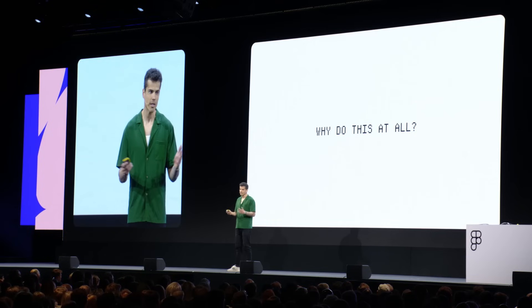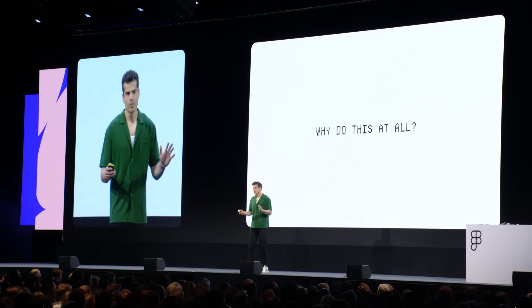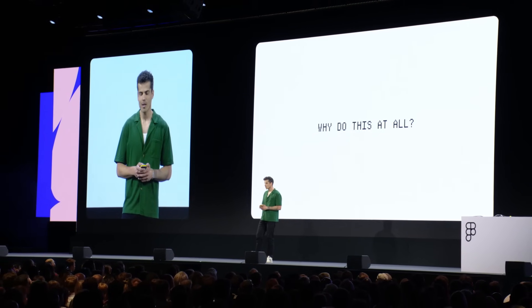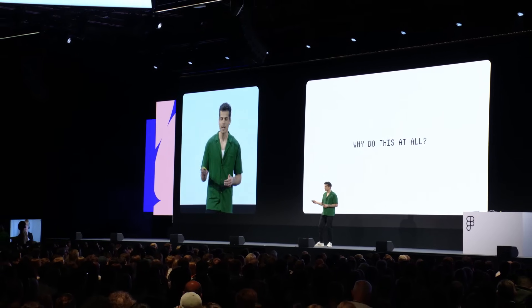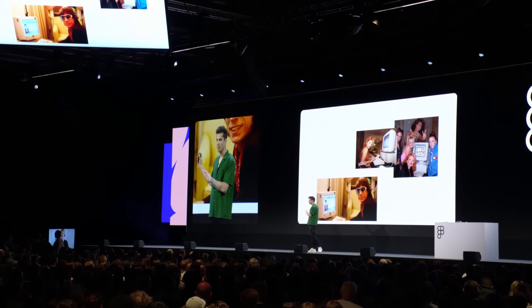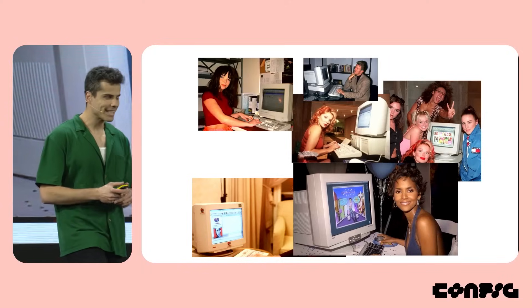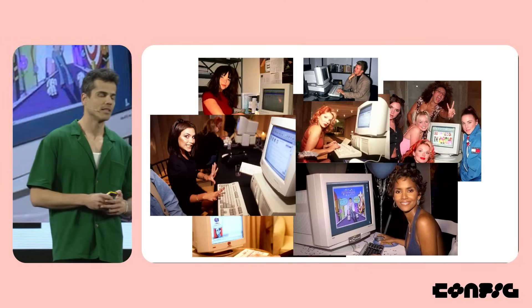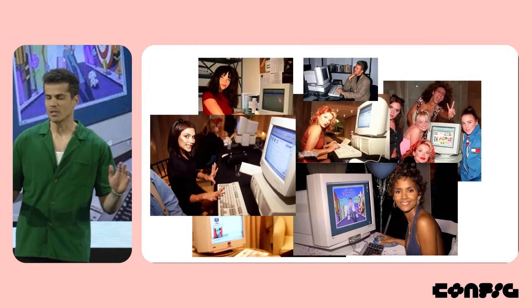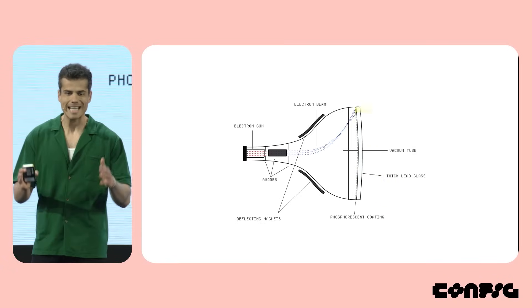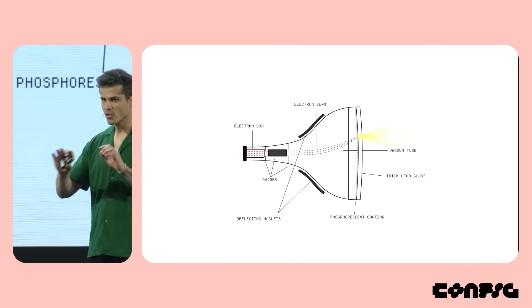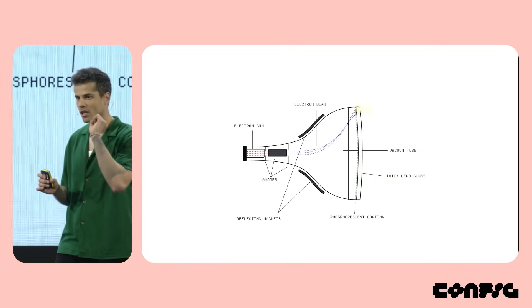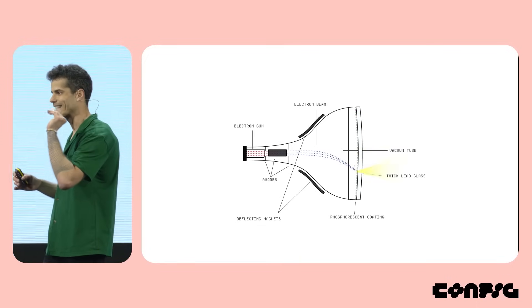So if it's so high risk, why bother doing it at all? To explain this, we have to go on a whistle-stop tour of how color works on digital displays. And to start that tour, we have to go back to 1996, where your computer monitor probably looked a little bit like this. This is a cathode ray tube display, and the way it works is absolutely incredible. It literally uses an electron gun to fire a beam of electrons at the screen.